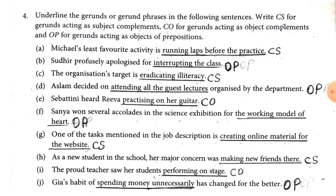Number E: 'Sheba Tinni heard Riva practicing on her guitar.' Here, 'practicing on her guitar' follows the object 'Riva', so it is object complement — write CO. Number F: 'Shania won several accolades in the science exhibition for making working models.' Here, the gerund phrase follows the preposition 'for', so it is object of the preposition — write OP.